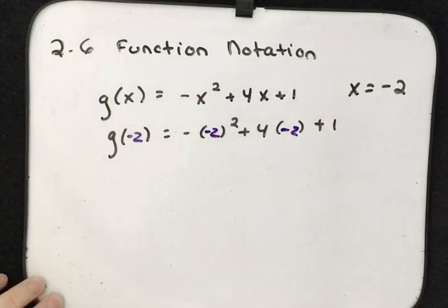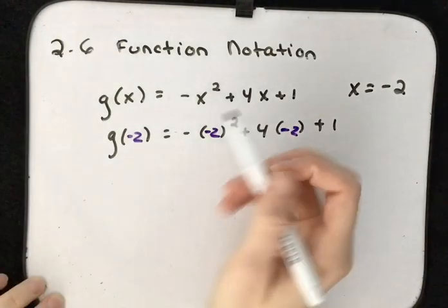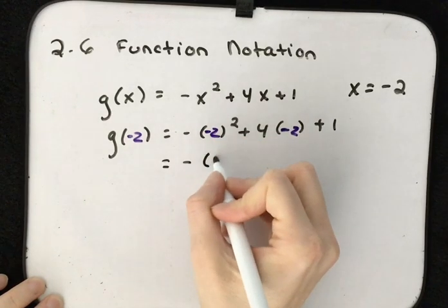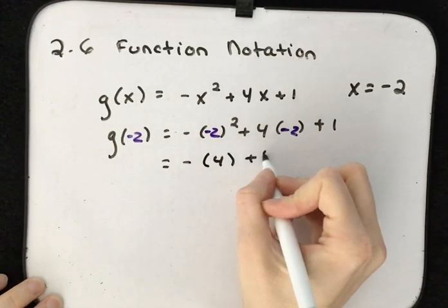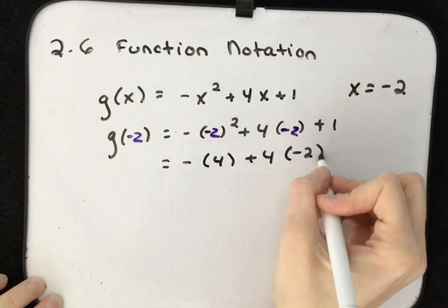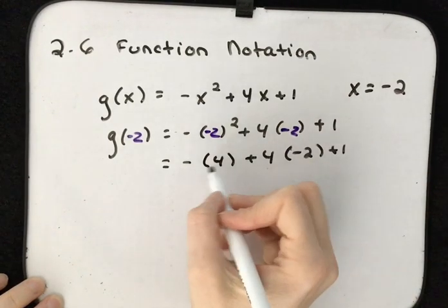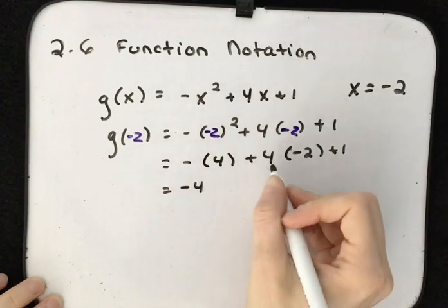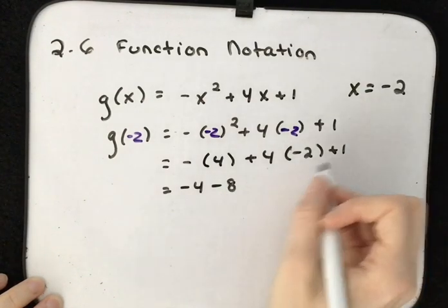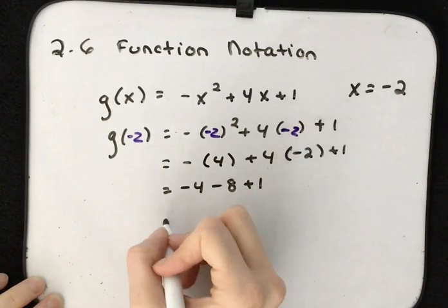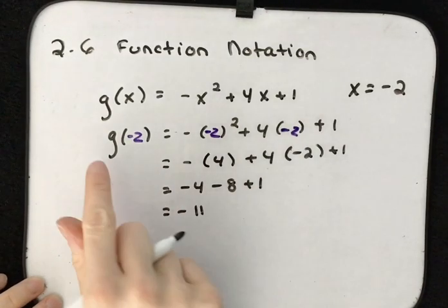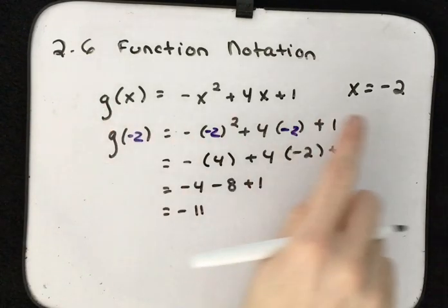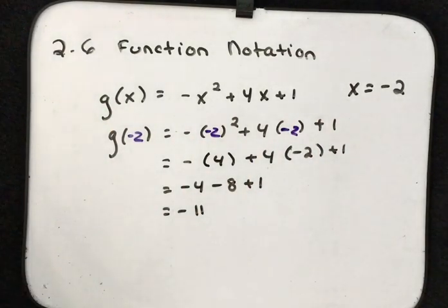Negative 2 times negative 2 is positive 4. 4 times the negative 1 in the front gives us negative 4. 4 times negative 2 is negative 8, plus 1, that gives us negative 11. So g of negative 2 — our function g of x evaluated when x is negative 2 — equals negative 11.